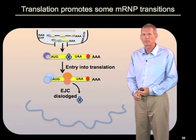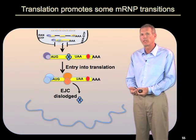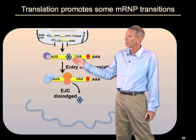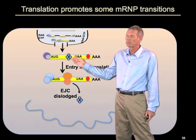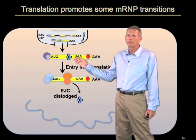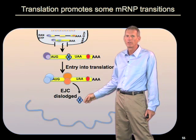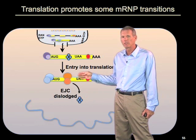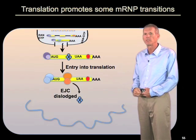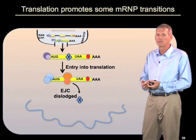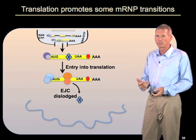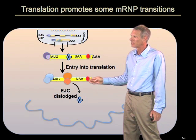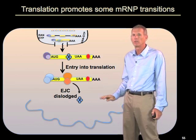Another way that proteins are exchanged is through the process of translation. When the message comes out of the nucleus, presumably there are many proteins binding to the coding region — one example being the exon junction complex, which is deposited at splice junctions predominantly found within the coding region. When ribosomes reach an exon junction complex, they dissociate it through direct interactions and bump it off the message. So the entry of mRNAs into translation and the movement of ribosomes down the message cause loss of proteins bound to the coding region. Whereas proteins bound to the 3' UTR are anticipated to remain relatively stably bound, though direct measurements of their dynamics in cells are lacking.